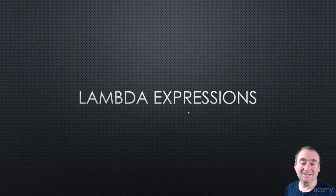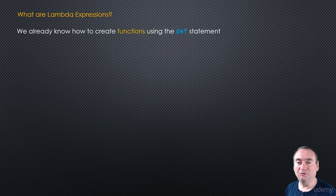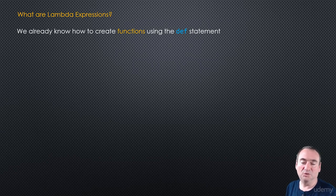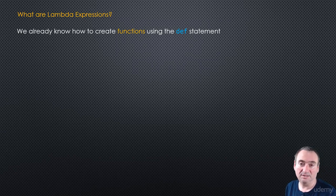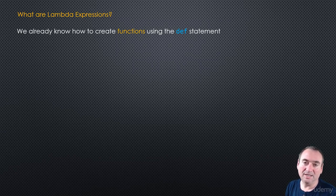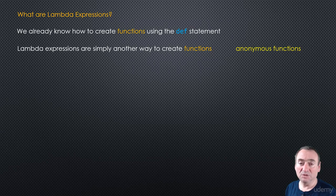In this video we're going to look at something called lambda expressions. We already know how to define and create functions in Python using the def statement — def, a function name, some parameters, a colon, the body, and optionally a return statement. If we don't supply a return statement, Python returns the None object. Lambda expressions are simply another way of creating functions. They're also called anonymous functions, and we'll see why in a bit.